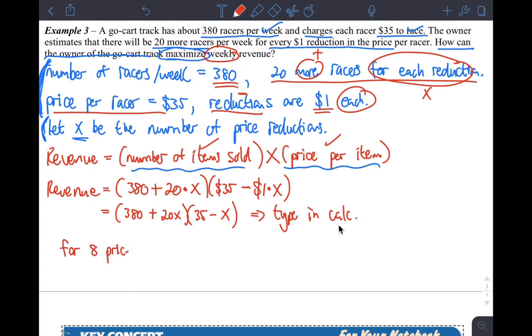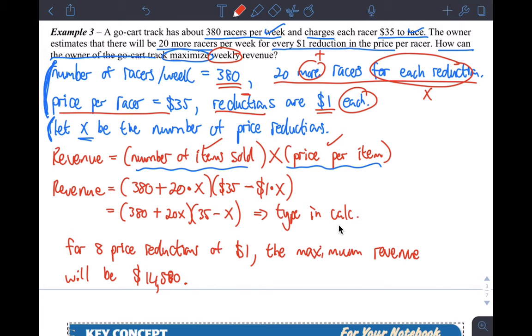So you say here, for eight price reductions of $1, the maximum revenue will be $14,580. And that's it. That's kind of tricky, but that's also like one of your homework questions. All right, guys. I hope this helped you.